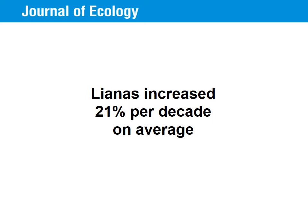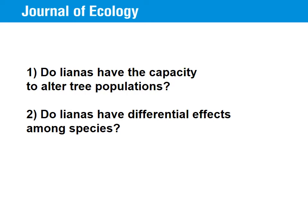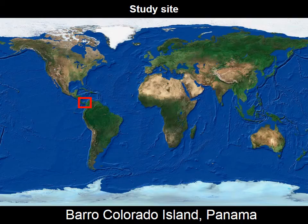We are not sure why this is happening, but it does beg the question of how these increasing liana abundances will affect tropical tree communities. Whether lianas will be able to influence tropical tree communities hinges on two conditions. The first is that lianas must be capable of influencing tree population growth rates — that is, the integrated effect of lianas on tree reproduction, growth, and survival must significantly impact tree species population growth rates. The second condition is that lianas affect some tree species more than others, potentially changing the composition of communities.